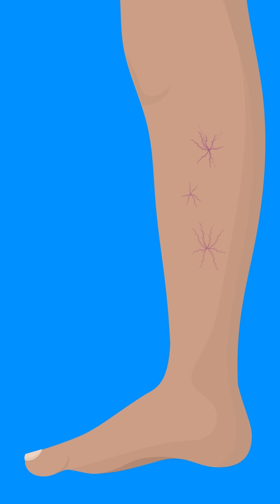The second type are net-shaped or reticular varices, which are a more advanced form whereby the branches of larger superficial veins are affected. They are thicker than spider veins and more bluish in colouring.